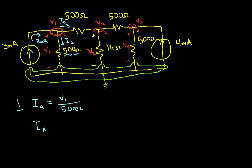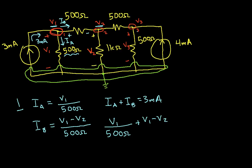Well, the voltage across this 500 ohm resistor is V1, so IA will be V1 over 500 ohms. IB—the voltage across this 500 ohm resistor in the direction the current's going is going to be V1 minus V2, so I can write this as V1 minus V2 divided by 500 ohms. Combining this with the fact that I have three milliamps going in, and the sum of the currents leaving the node equals the current entering the node, I can write this as IA plus IB equals 3 milliamps, or V1 over 500 ohms plus V1 minus V2 over 500 ohms equals 3 milliamps.